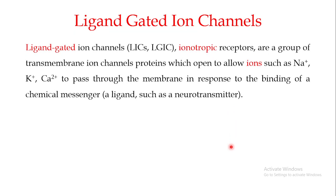Ligand-gated ion channels, also known as ionotropic receptors, are a group of transmembrane ion channel proteins that allow the movement of ions such as sodium, potassium, and calcium through the membrane in response to the binding of a chemical messenger. The most important point is that ion channels which open after the binding of a ligand are known as ligand-gated ion channels.